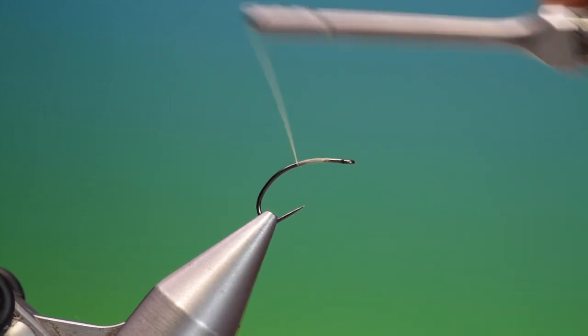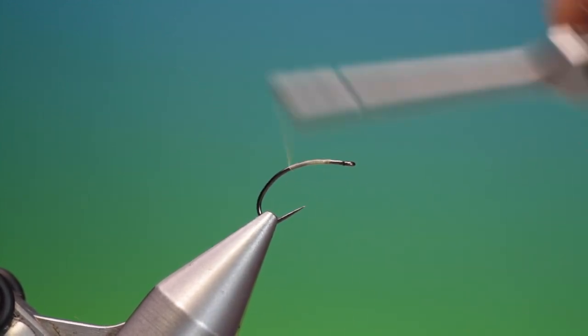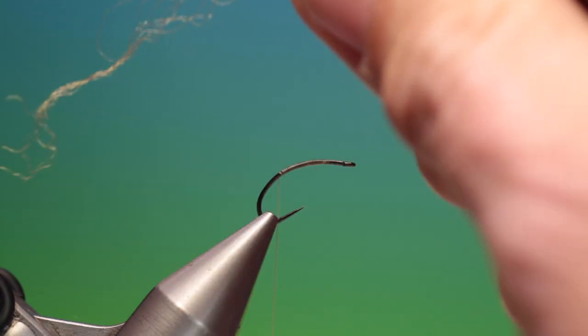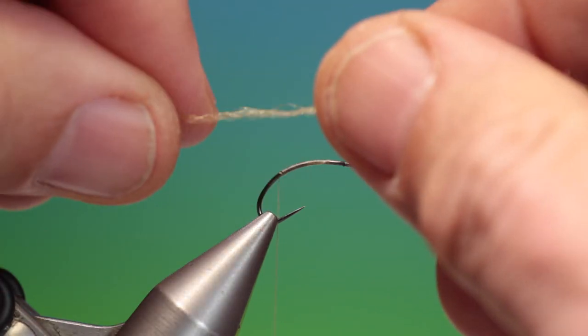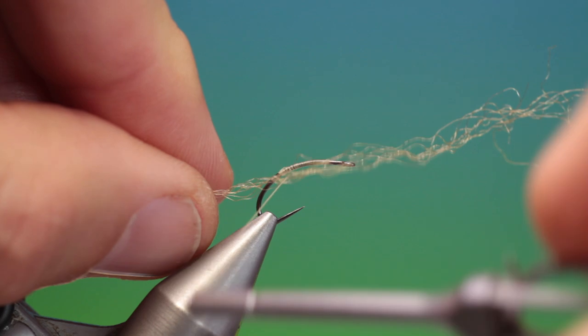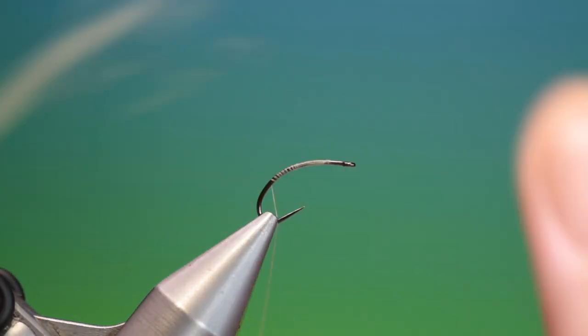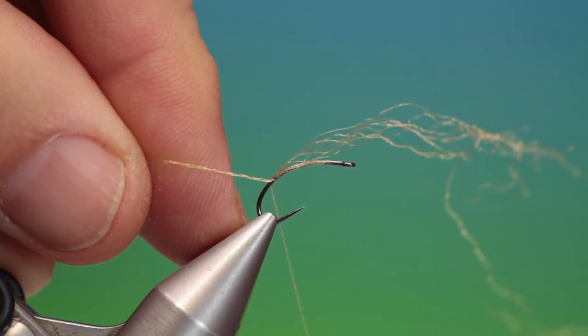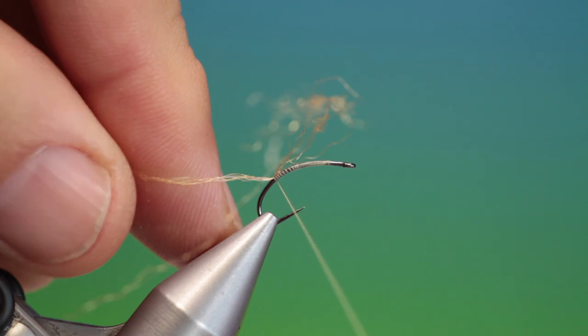So we'll just attach this, remove that, and we want to go down into the bend to about there. I've got a very fine piece of brown Xelon. I'll go back here with that and just attach that in.